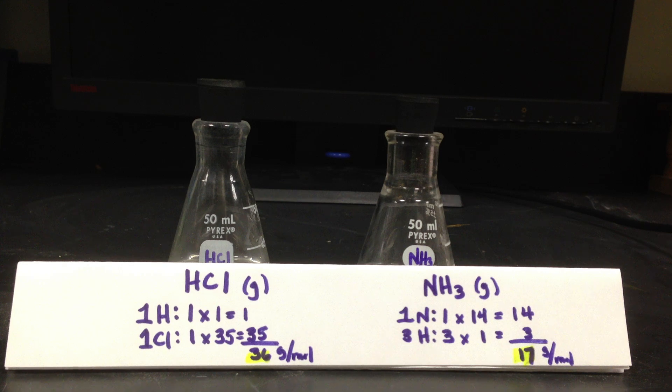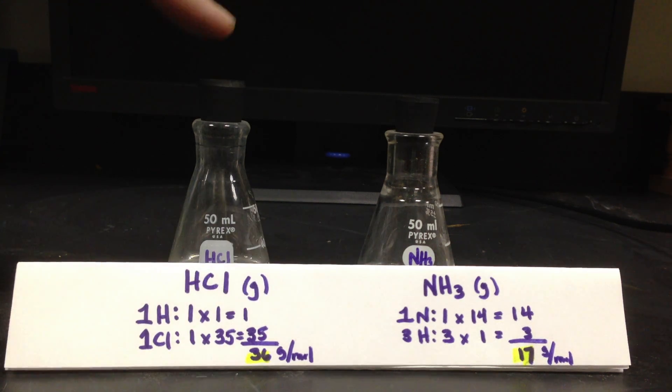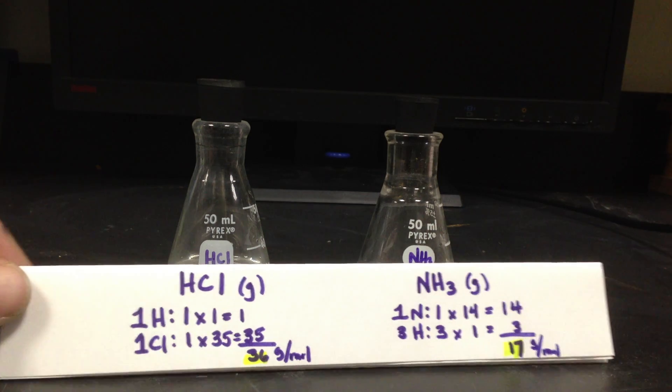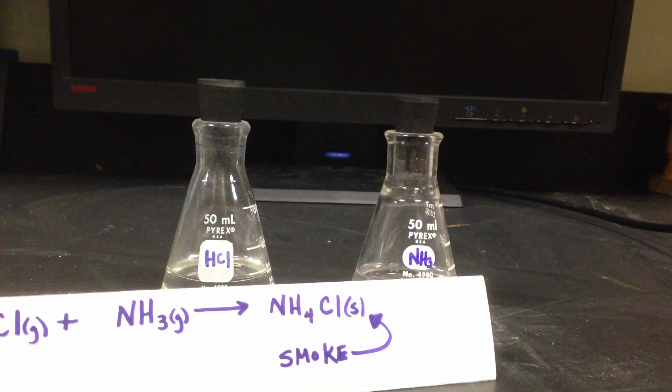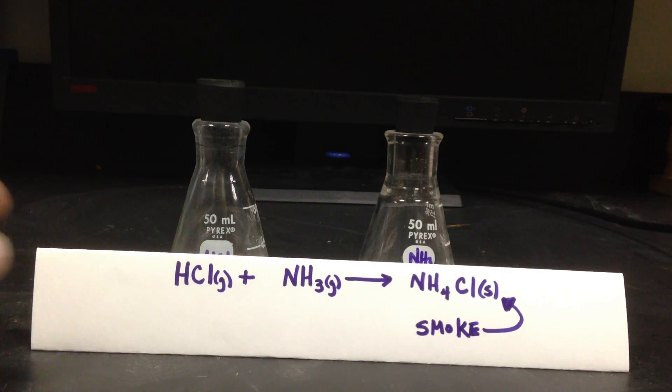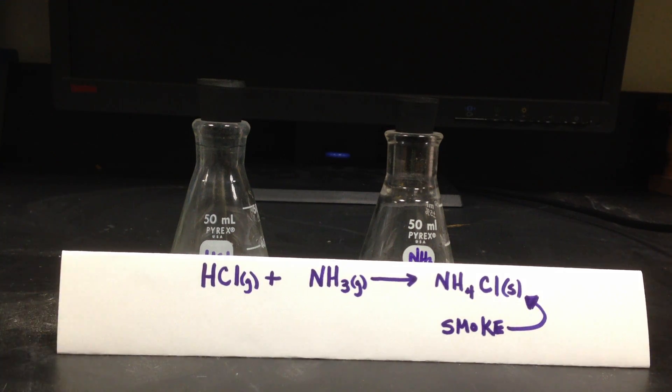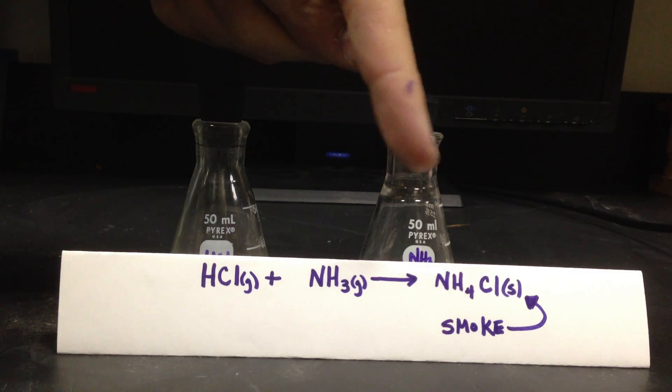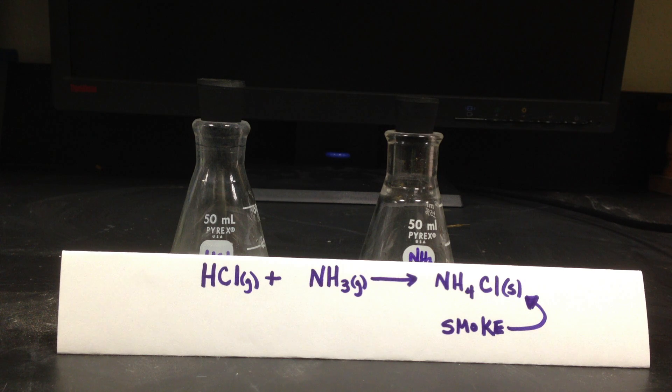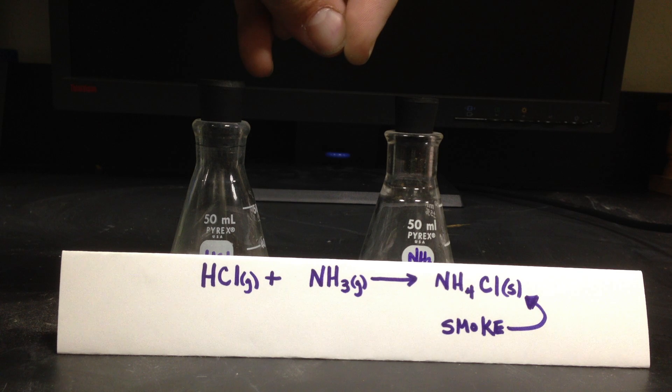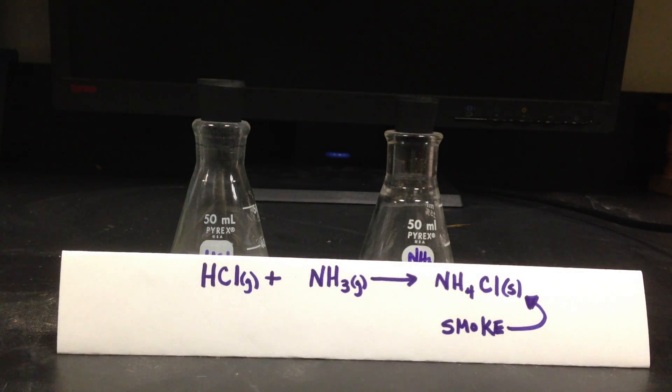What I'm going to do is take the stoppers off these two Erlenmeyer flasks and we're going to see which gas is acting faster. When the two gases touch each other, they're going to react to make ammonium chloride. Hydrochloric acid plus ammonia will react to make ammonium chloride, which will make white smoke.